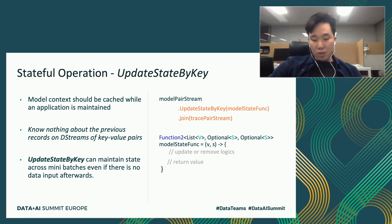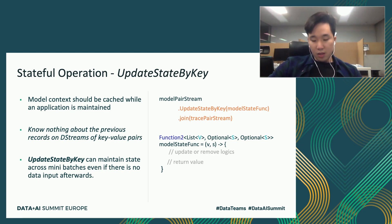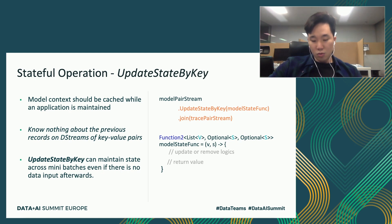Without the stateful operation, the application knows nothing about the previous records on these streams. As shown in the code on the right, we join the model stream with the trace stream. To maintain state, we use the updateStateByKey with a function, which is a stateful operation. We can define some logic using the previous state inside the function, and this can be passed to the stateful operation as an argument.